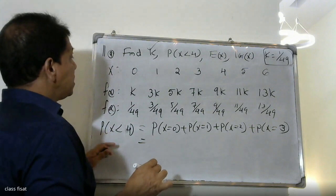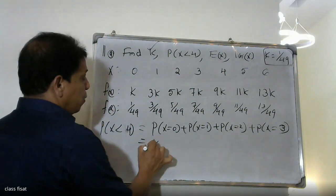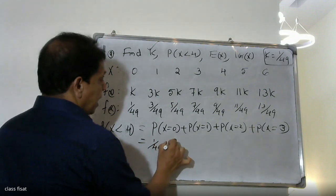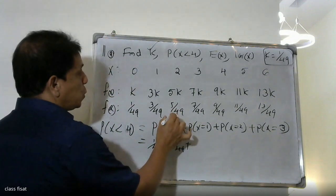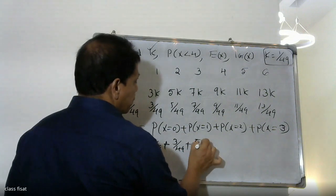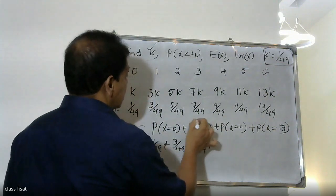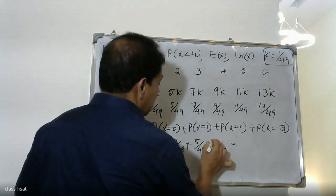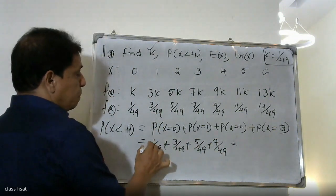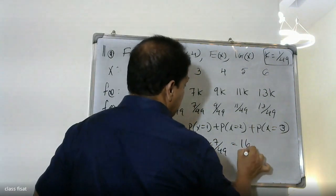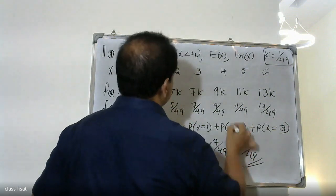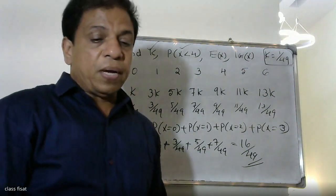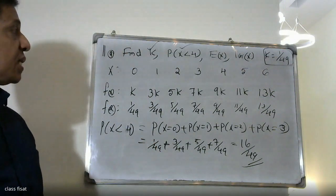That is: P(X=0) = 1/49, P(X=1) = 3/49, P(X=2) = 5/49, P(X=3) = 7/49. So the probability of X less than 4 equals 1/49 plus 3/49 plus 5/49 plus 7/49, which gives 16/49.